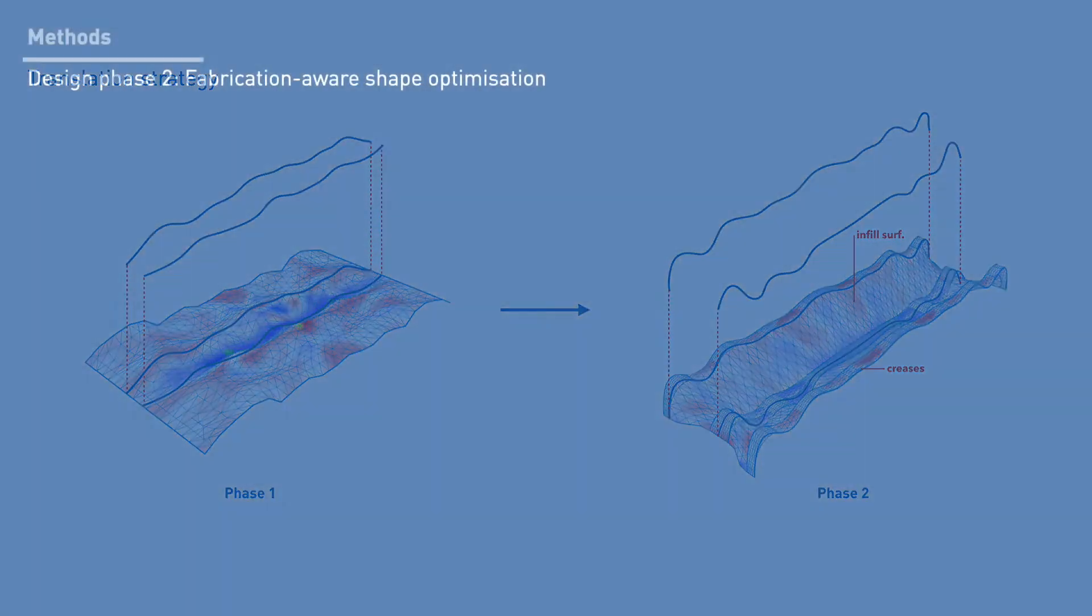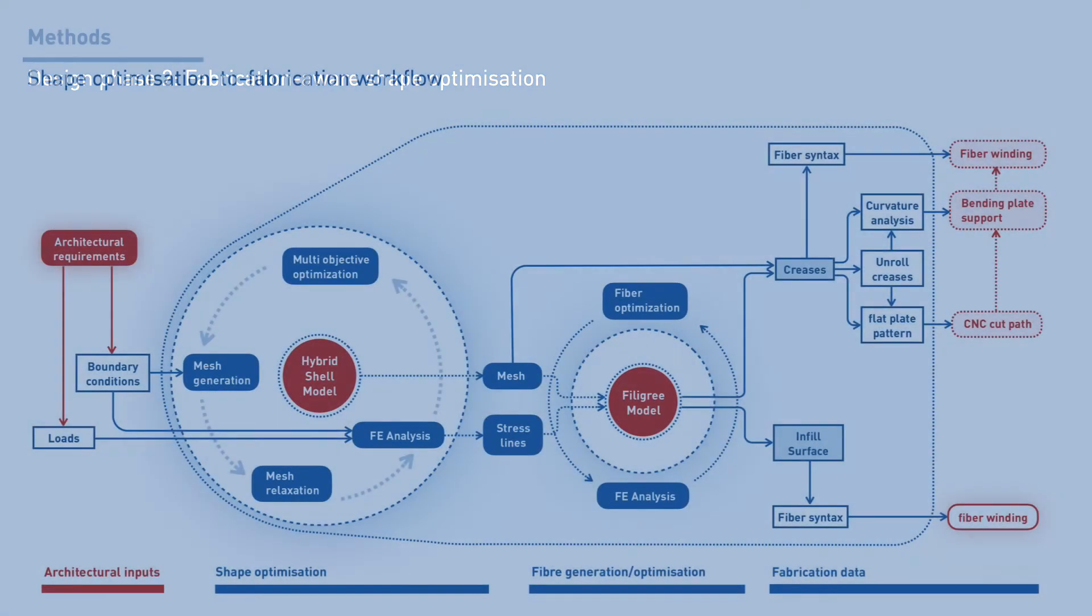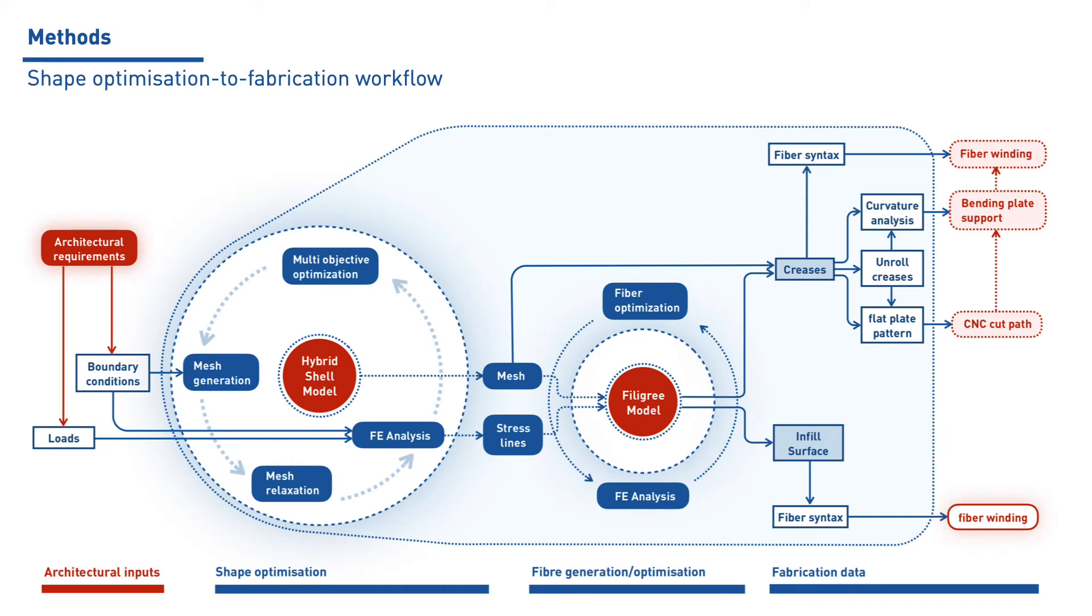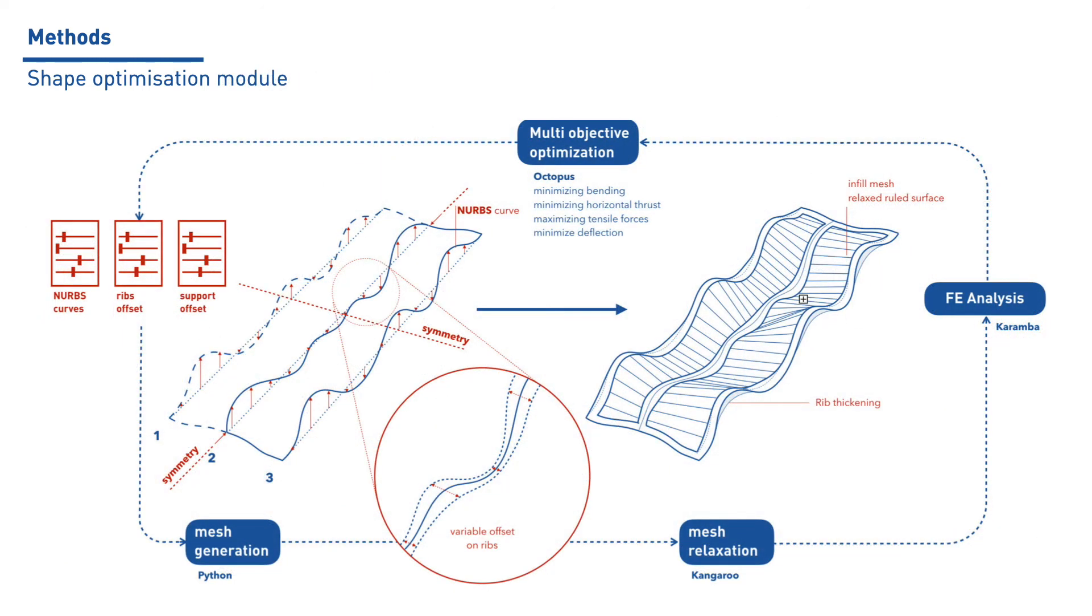A material-aware shape optimization is then implemented. It consists of four modules: the first defines the architectural inputs, a second one that sets the shape optimization loop to generate the shell model, and a third one that generates the fiber or filigree model, and a final one where the fabrication instructions are produced. The inclusion of the fabrication constraints to the shell design obviously leads to a significantly more complex model than the one used in phase one. A balance between the quick generation and analysis required during the optimization and a reliable simulation becomes critical.